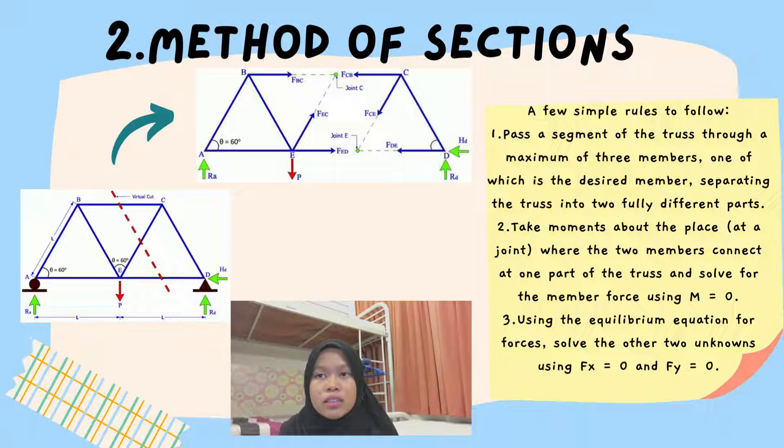To solve for member forces, any of the two portions of the truss can be examined. The three equations of equilibrium, Fx equals zero, Fy equals zero, and moment M equals zero can be used.